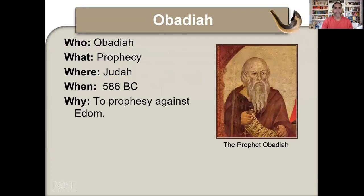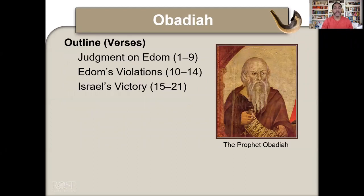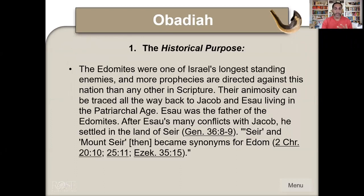Now Obadiah — prophecy in Judah, 586 BC, the prophecy against Edom, one of the enemies of the Jews. Judgment on Edom, chapters 1 through 9; Edom's violation, verses 10 to 14; Israel's victory, verses 15 to 21. It spoke not only to Israel but also to other nations. The Edomites were one of Israel's longest standing enemies, and more prophecies are directed against this nation than any other in Scripture. Their animosity can be traced back to Jacob and Esau — Esau was the father of the Edomites, and Jacob stole Esau's birthright.